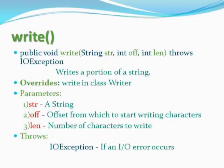Write: public void write(String str, int offset, int len) throws IOException. Writes a portion of a string. Overrides write in class Writer. Parameters: str — a string; offset — offset from which to start writing characters; len — number of characters to write. Throws IOException if an I/O error occurs.